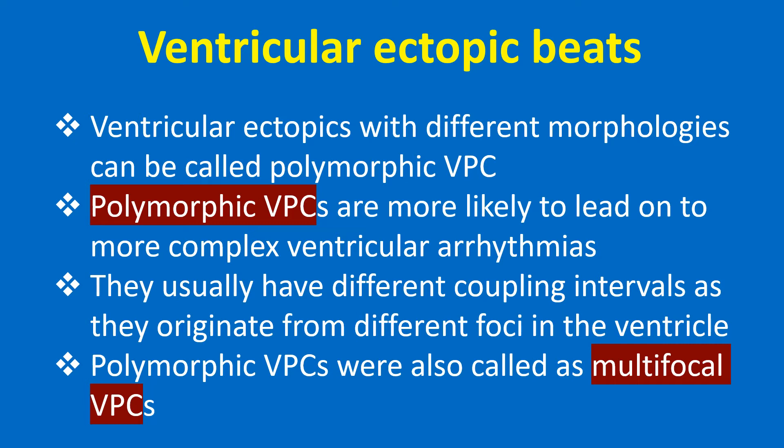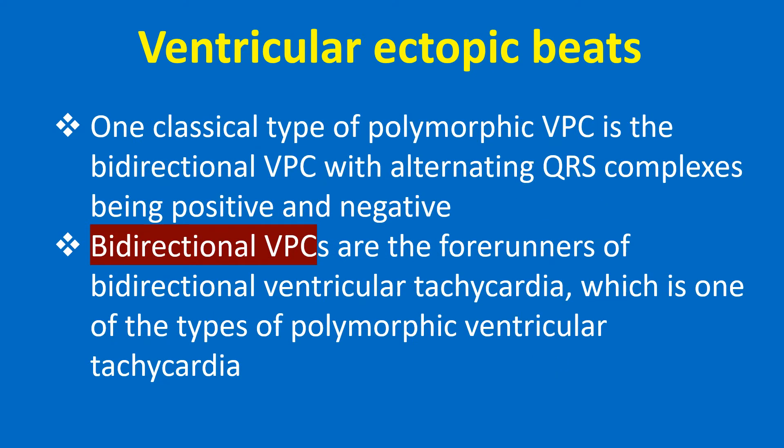Polymorphic VPCs were also called multifocal VPCs. One classical type of polymorphic VPC is the bidirectional VPC, with alternating QRS complexes being positive and negative. Bidirectional VPCs are the forerunners of bidirectional ventricular tachycardia, which is one of the types of polymorphic ventricular tachycardia.